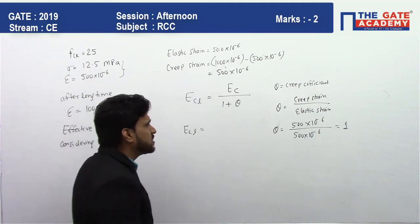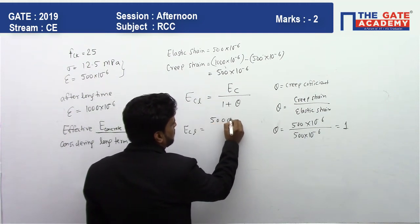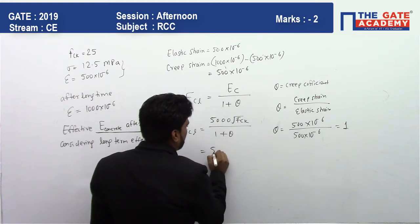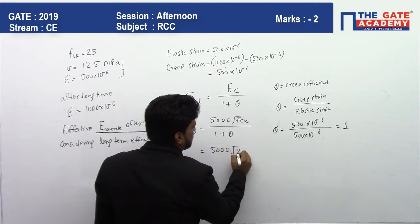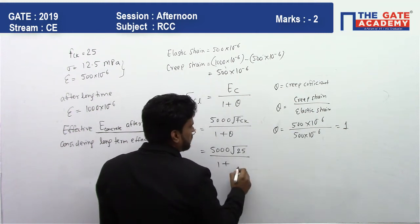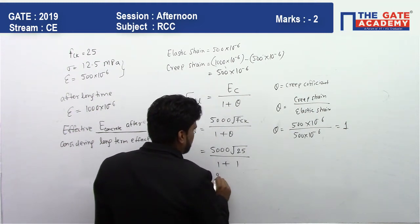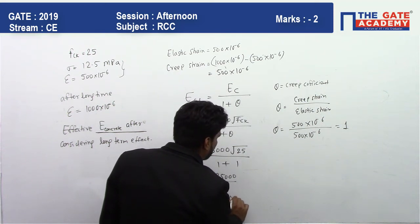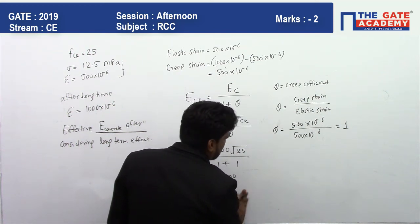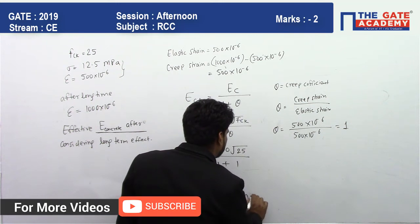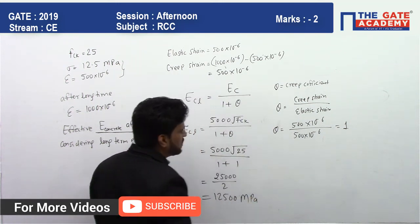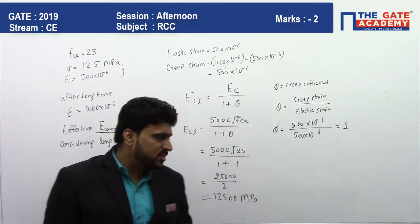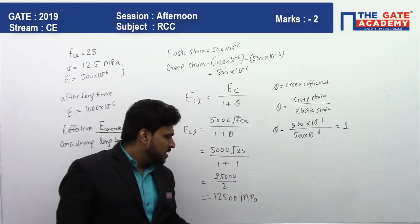The initial elastic modulus of concrete is Ec = 5000√fck = 5000×√25 = 25000 MPa. Therefore, Ecl = 25000 / (1 + 1) = 25000 / 2 = 12500 N/mm² (MPa). So 12500 MPa is the long-term effective elastic modulus — it was initially 25000 MPa but reduced to 12500 MPa due to creep.